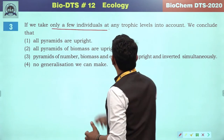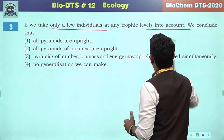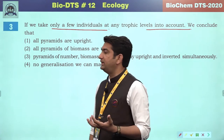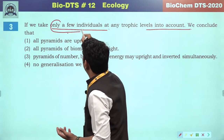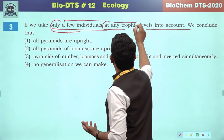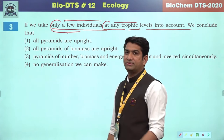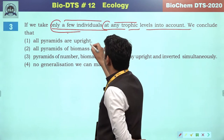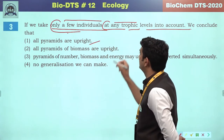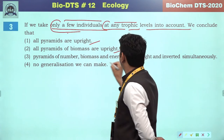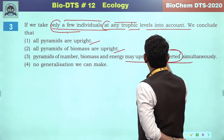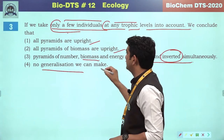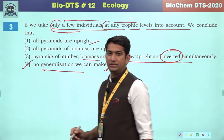If we take only a few individuals at any trophic level into account, we are discussing only a single trophic level. So we cannot conclude that all pyramids are upright, nor that pyramids of number, biomass and energy may all be inverted — not all are possible. We cannot make any general aspect or generalization, so the correct answer will be option 4.